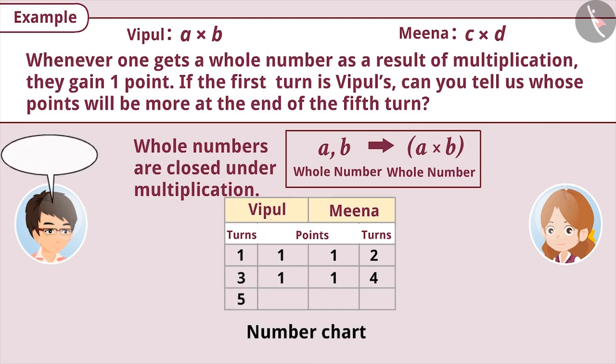Now, fifth turn is Vipul's. Vipul picked the numbers 0 and 2. Will he get one point? Think for a while. Yes, you are right. 0 multiplied by 2 is equal to 0. And since 0 is also a whole number, Vipul will get one point. With this, Vipul scored 3 points and Meena scored 2 points. Thus, Vipul got the highest points.